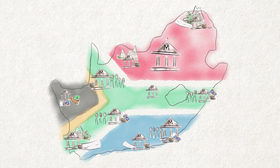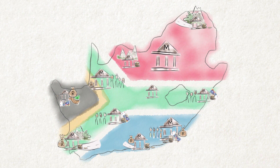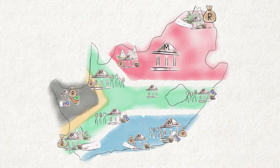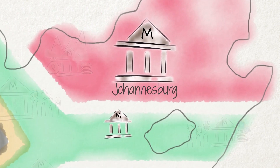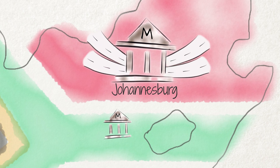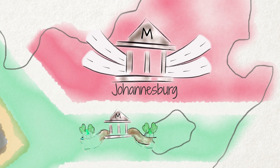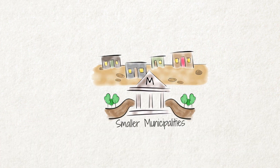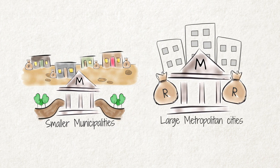A big city like Johannesburg, for example, needs to build and maintain many freeways, whilst small rural towns have to take care of fewer roads. Smaller municipalities, however, often have to serve a vast rural area, but people don't have the same ability to pay for services as they do in large metropolitan cities.